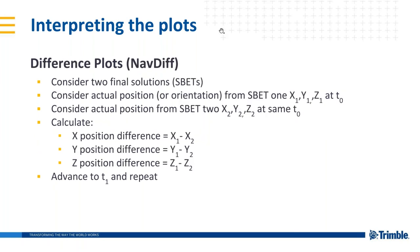The second plot is the difference plot — in POSPAC this is called NavDiff, which some of you may be familiar with. We have two final SBET solutions. We take the actual position or orientation from SBET number one at a certain point in time, then take the same point in time from SBET number two, and simply calculate the position difference in X, Y, Z, and so on. We do this for all points in time and end up with a graph showing the difference on the y-axis and time on the x-axis.